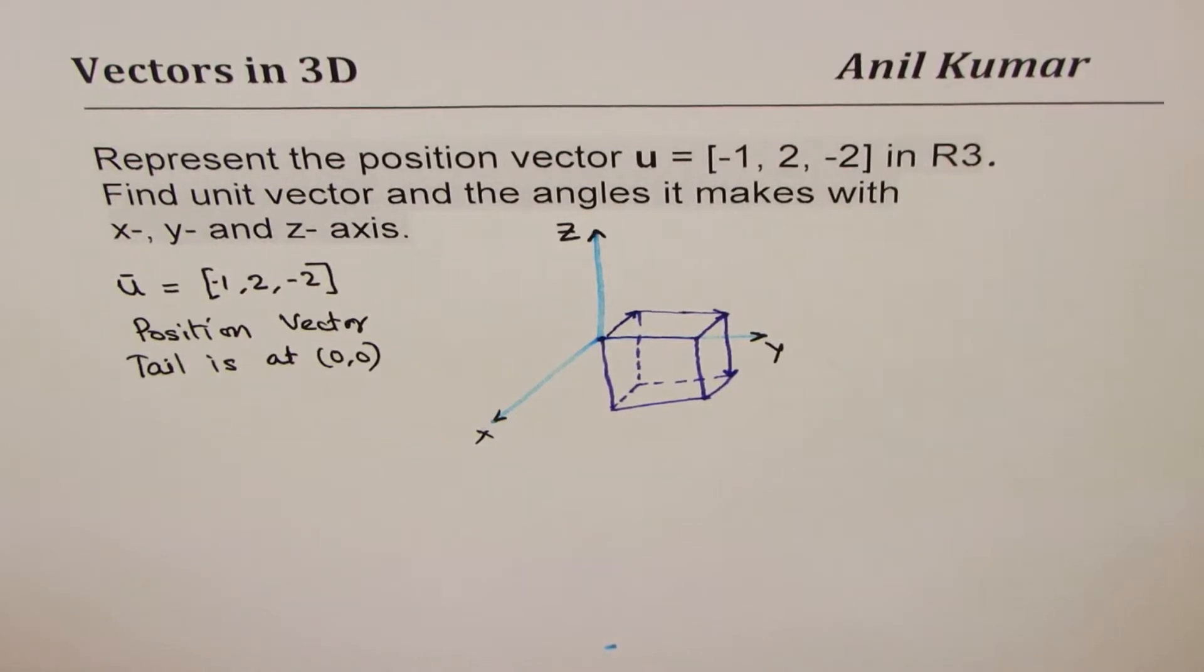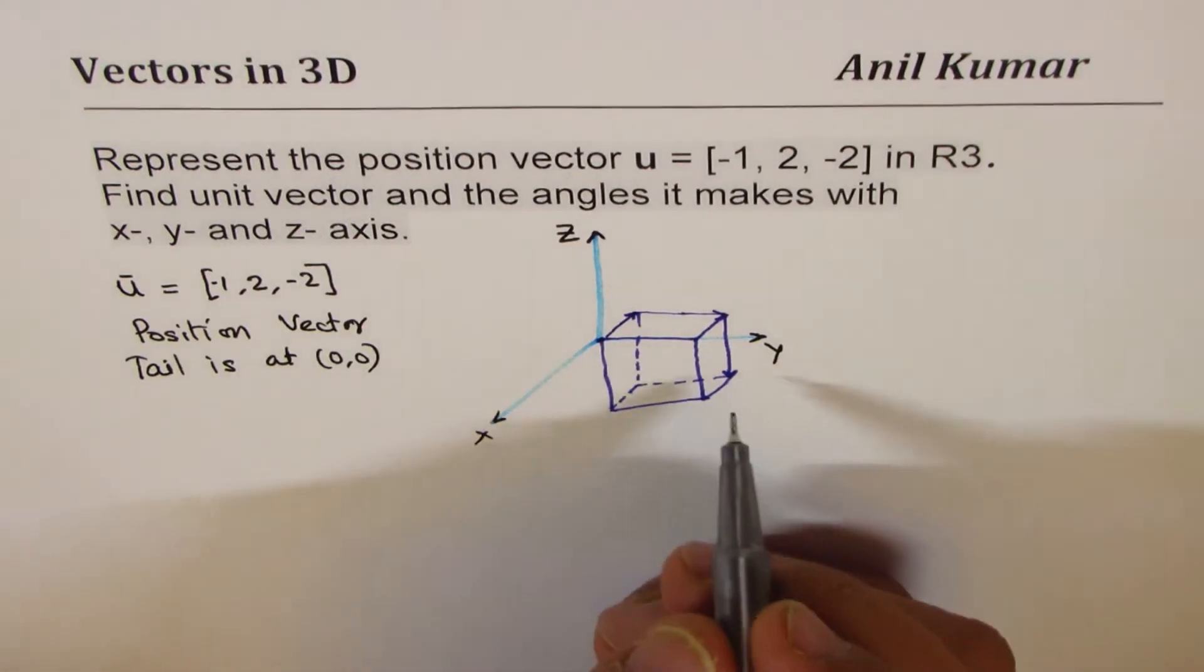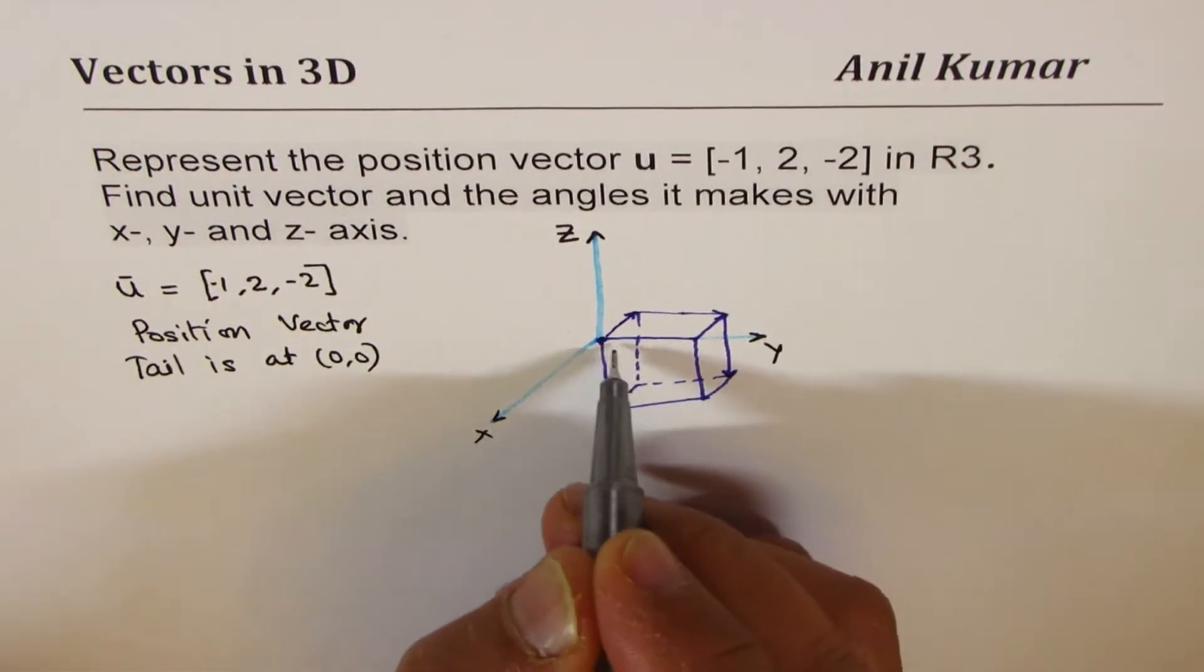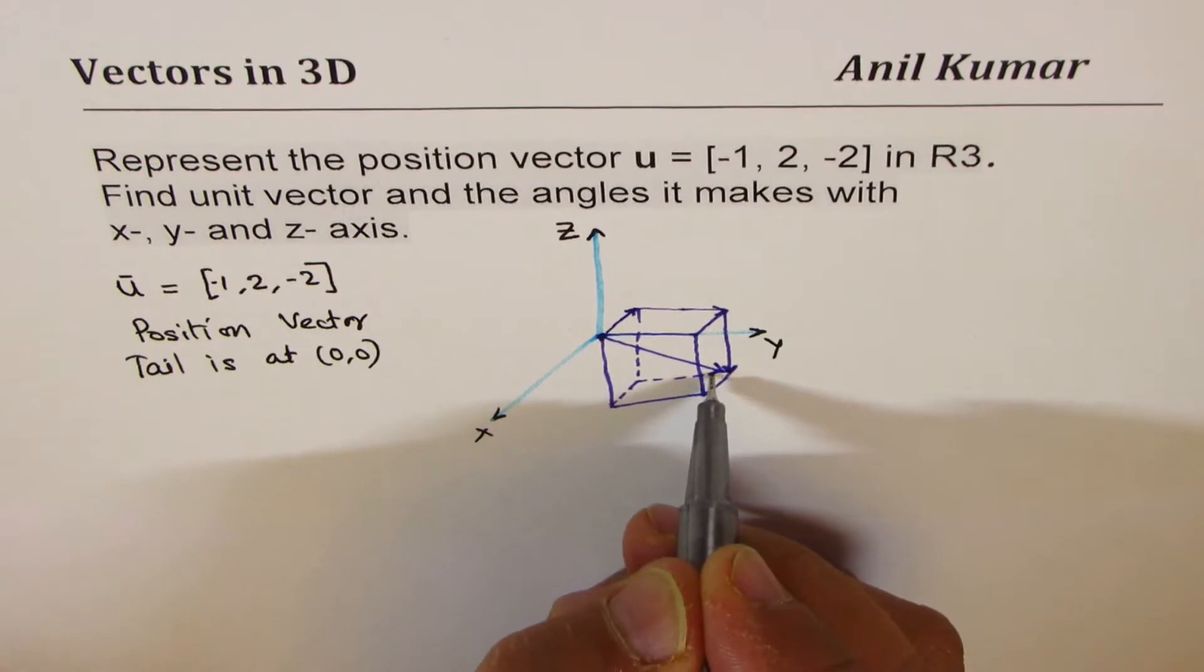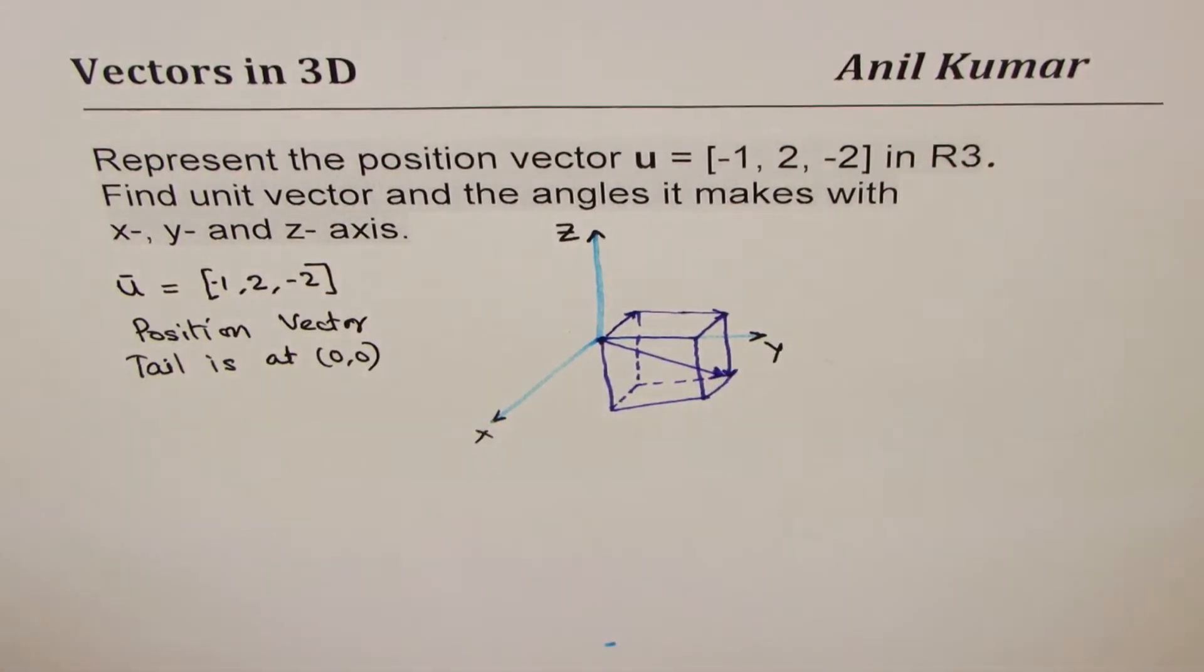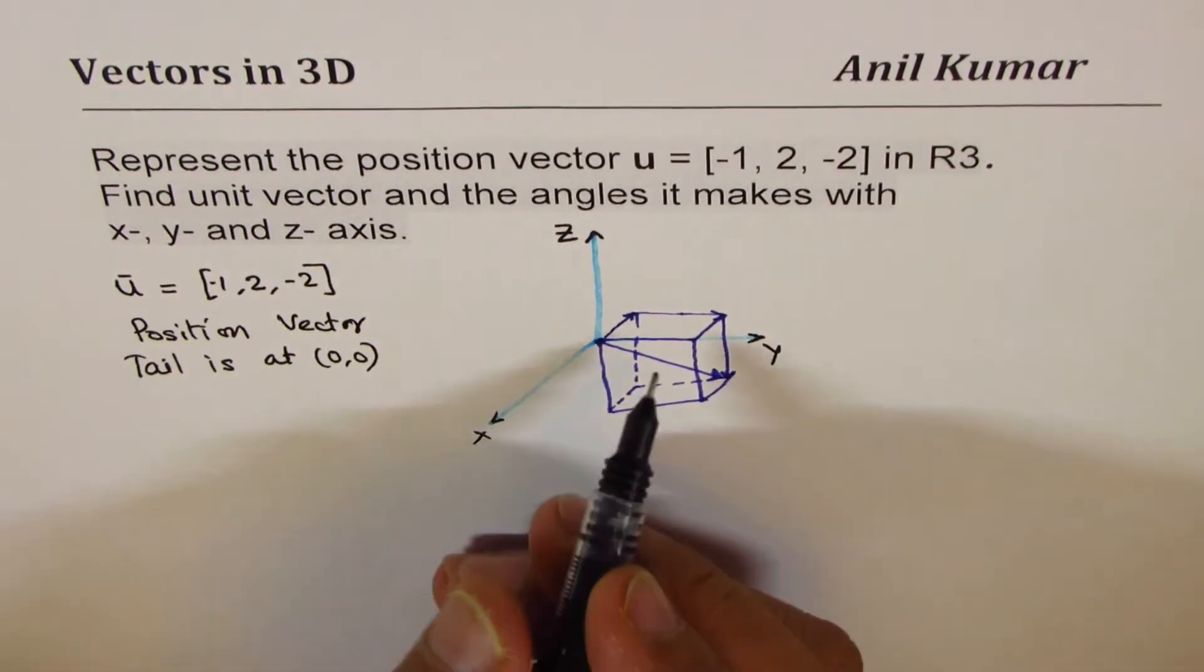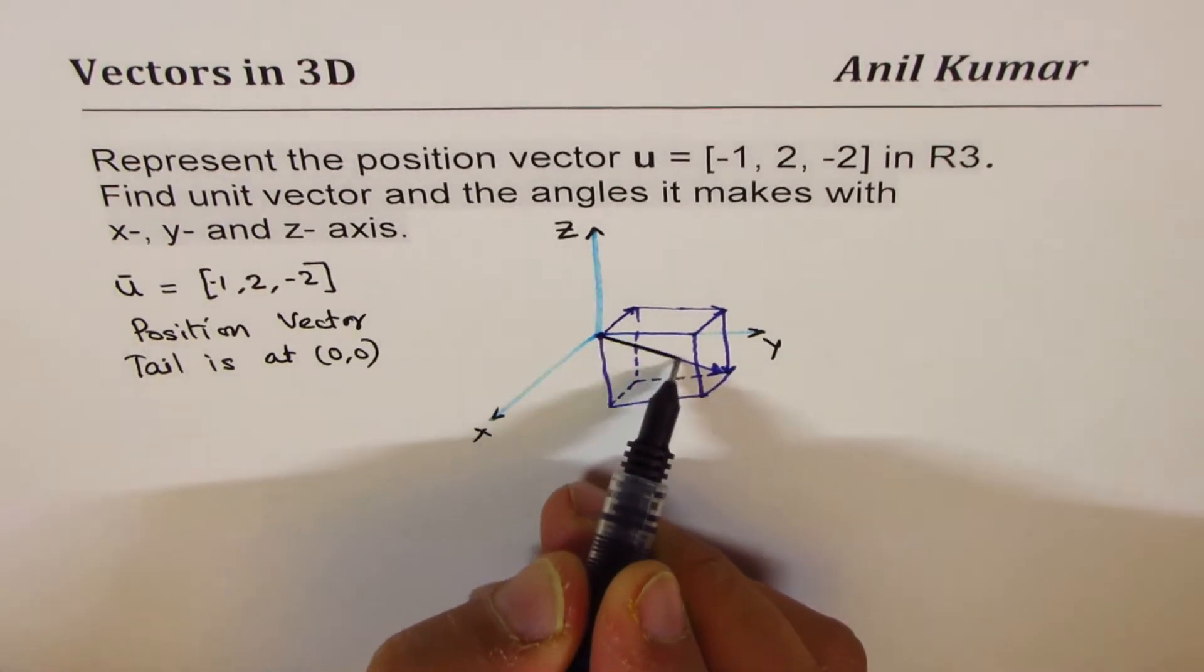And within this box, we'll represent the vector u. So, tail and head at that point. So it is kind of like this. That becomes our vector. So let me write it, show it bold here.